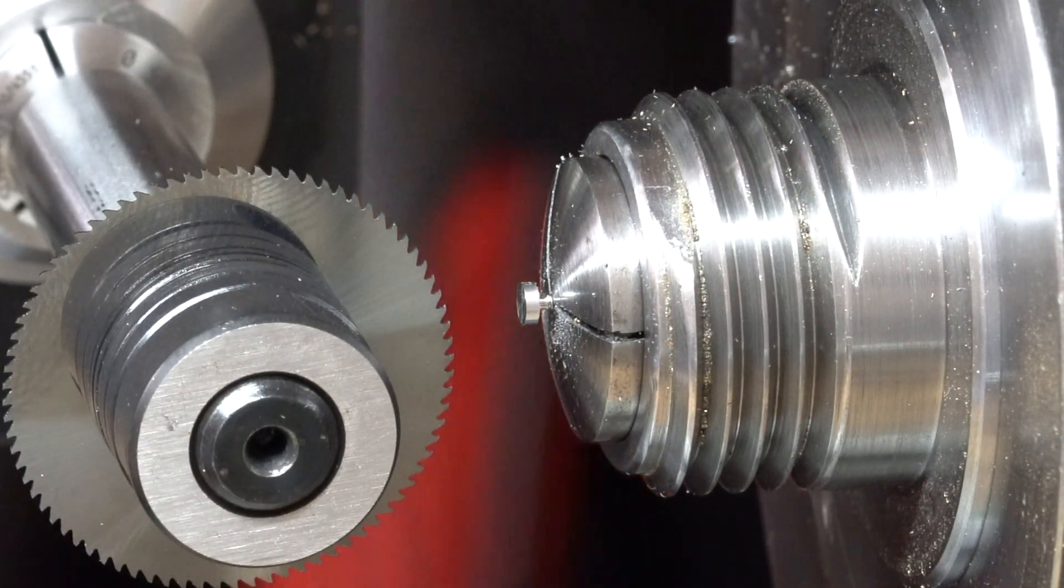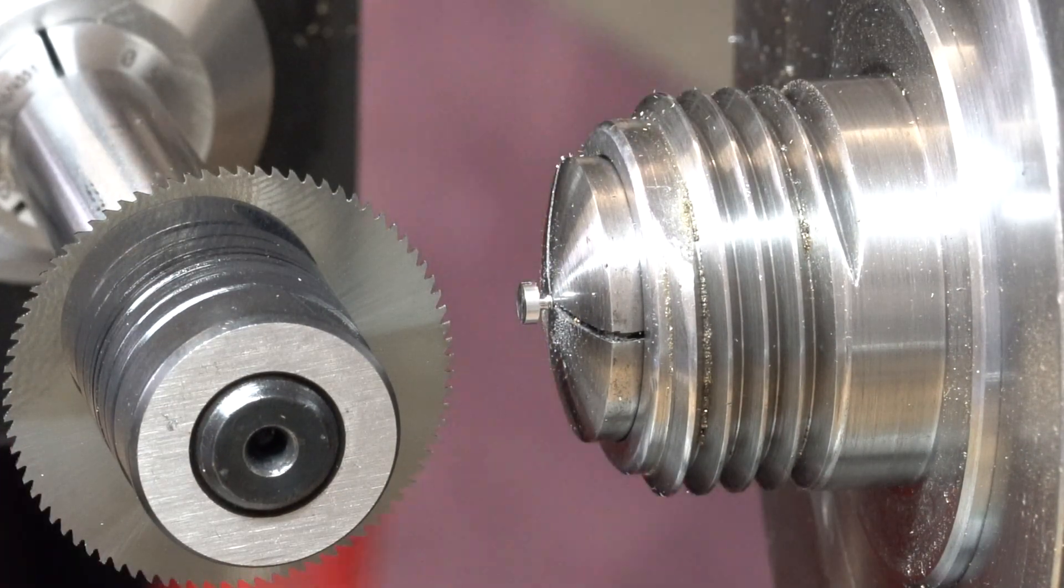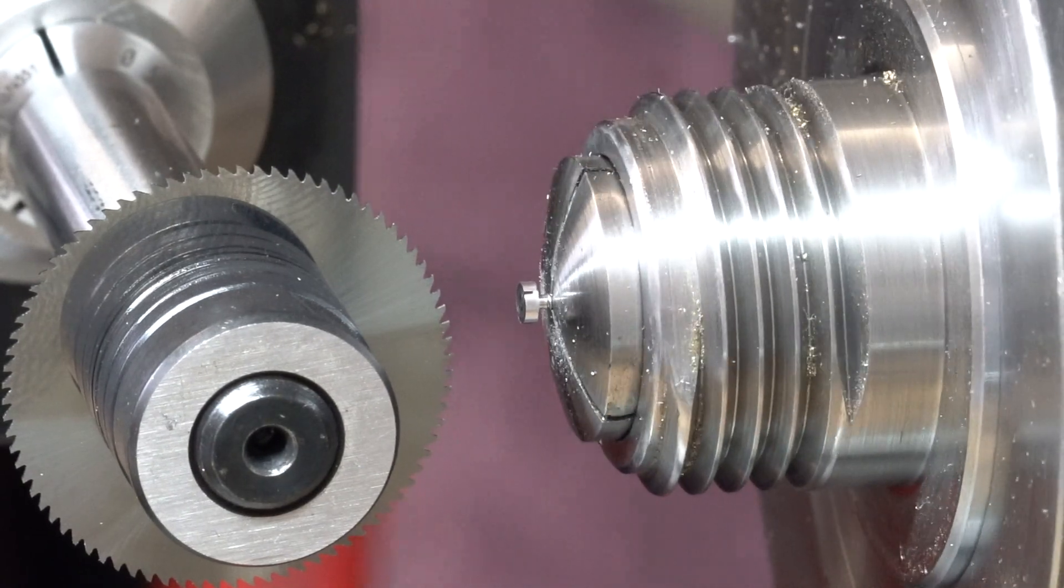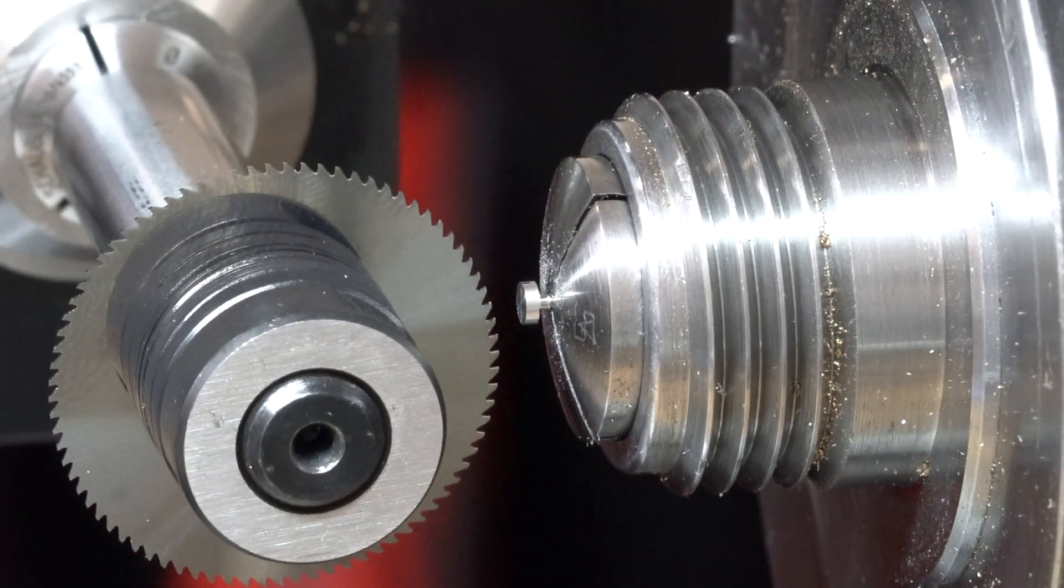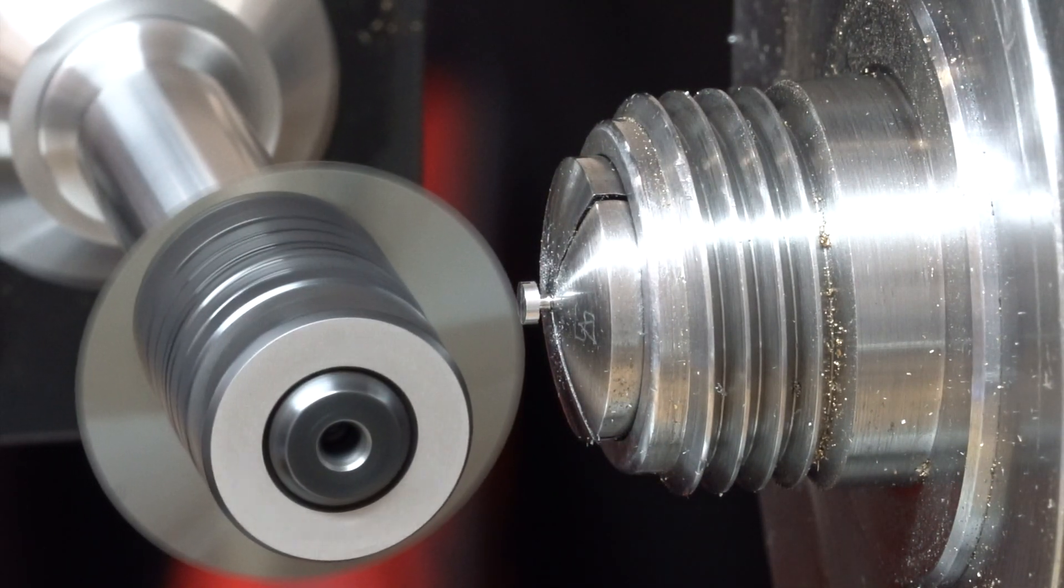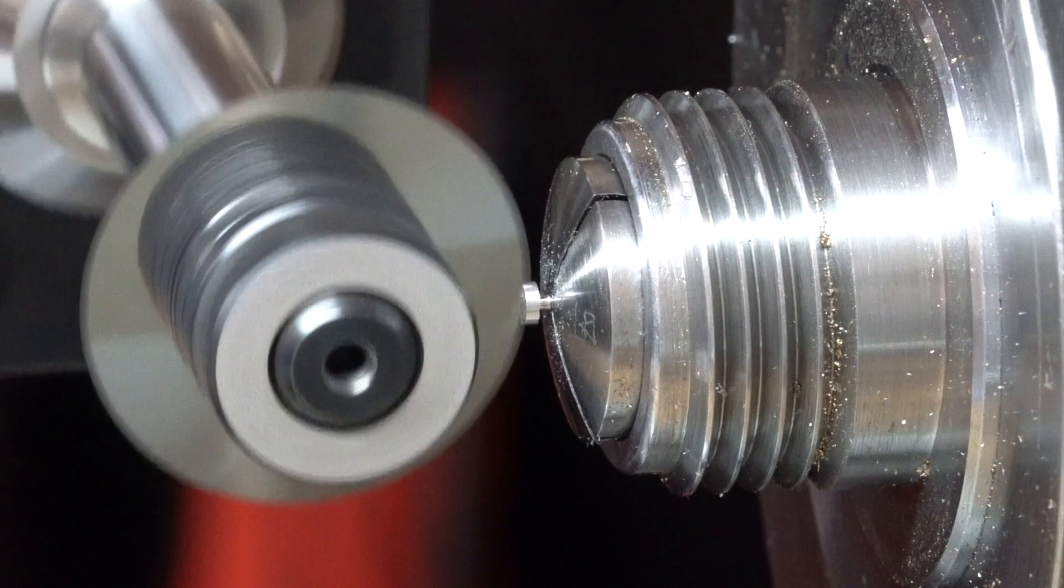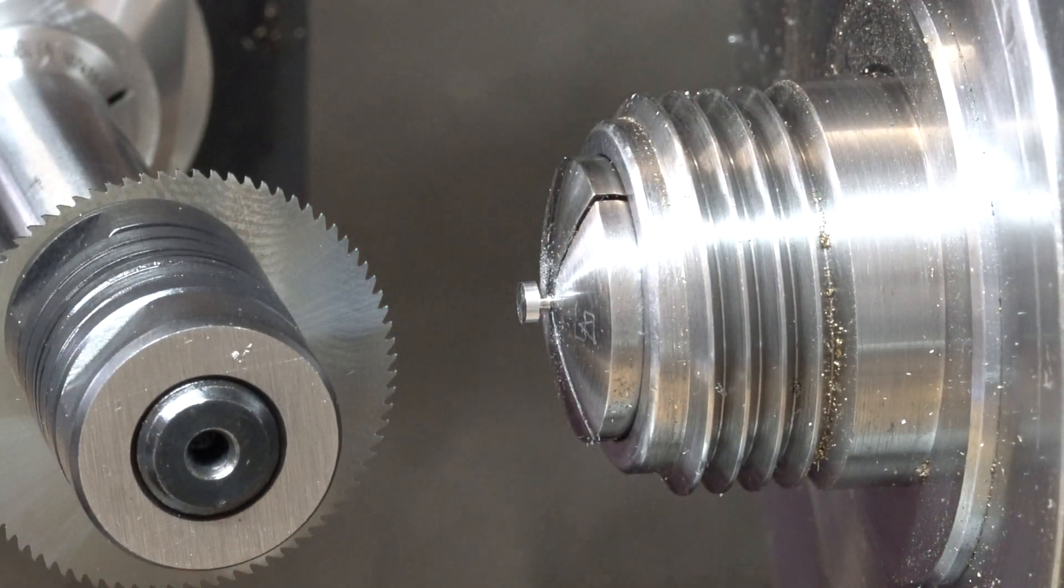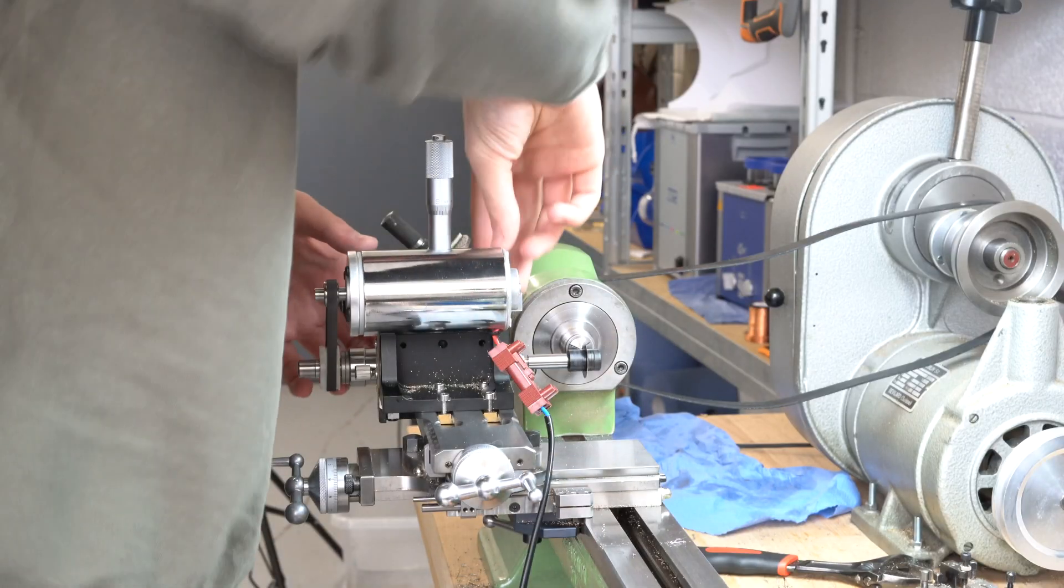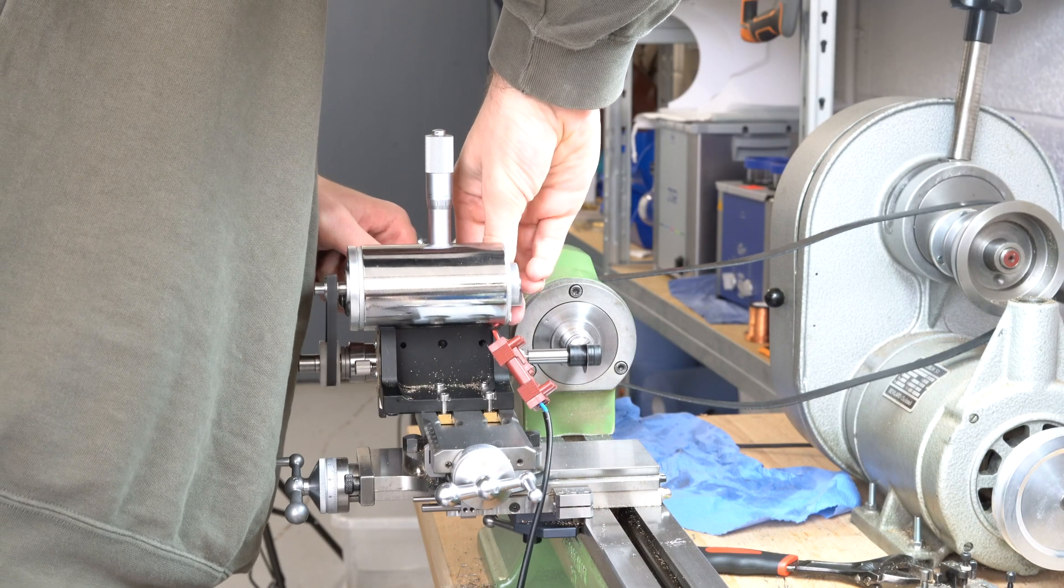So once I've gone to final depth, I then retract the cutter, I rotate the screw 180 degrees and do another spring pass. That just makes 100% certain that the slot is in the centre of the screw. Here you can see exactly what I'm doing with the milling attachment when cutting the screw slot.